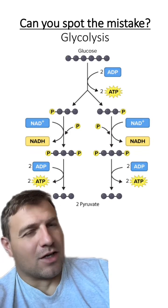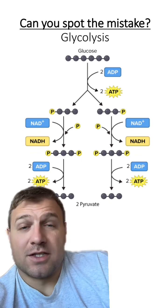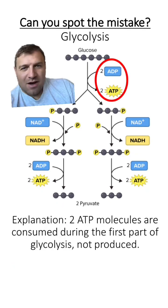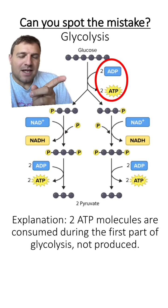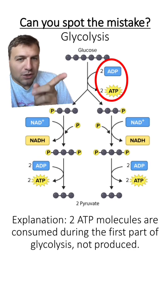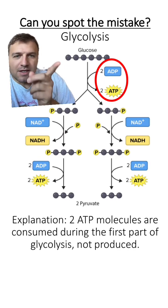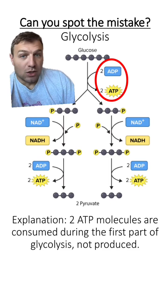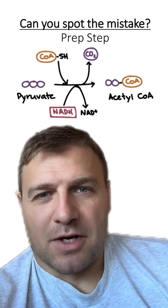If you need some help, I'll give you a hint. Remember, there are two major steps within glycolysis. The error here is in the first part, called the energy investment step. We don't produce ATP in this step — we actually use it up. I switched around these two different labels here. It should be ATP being used.